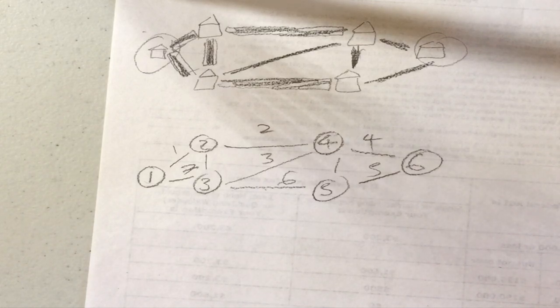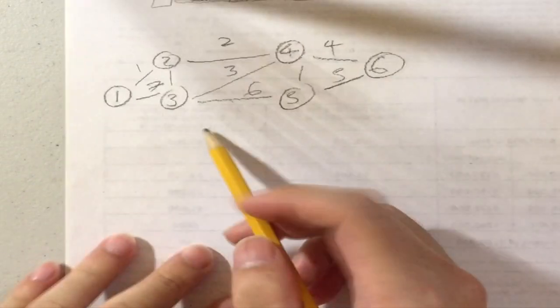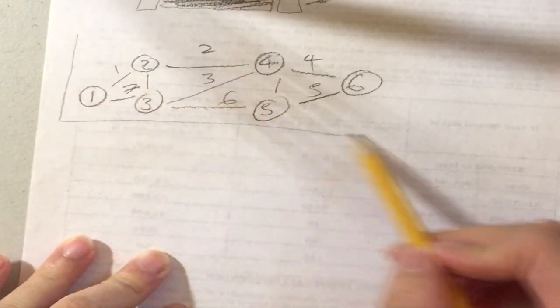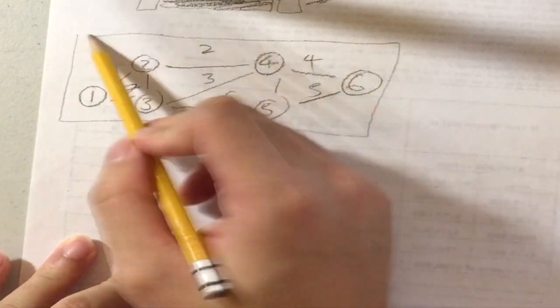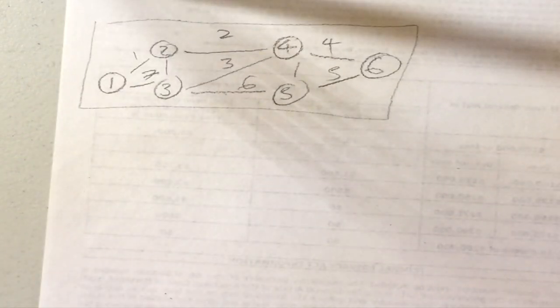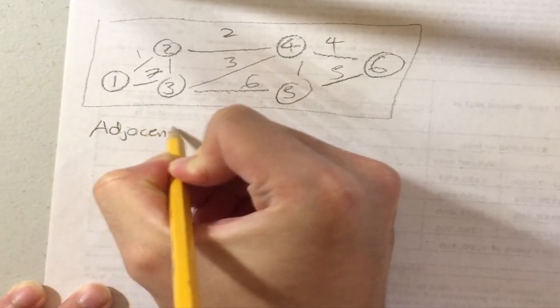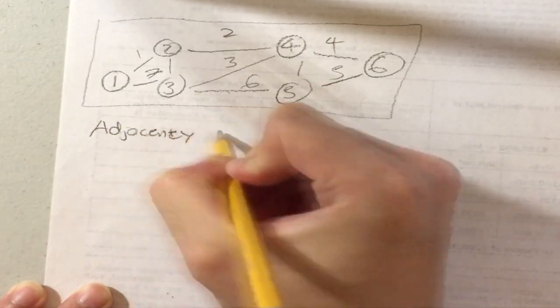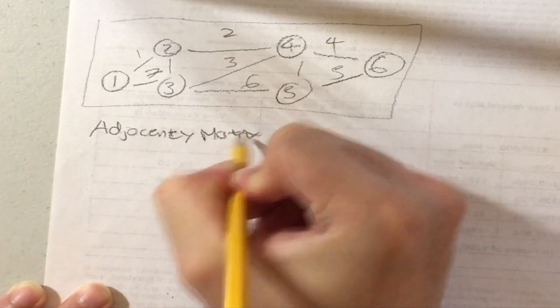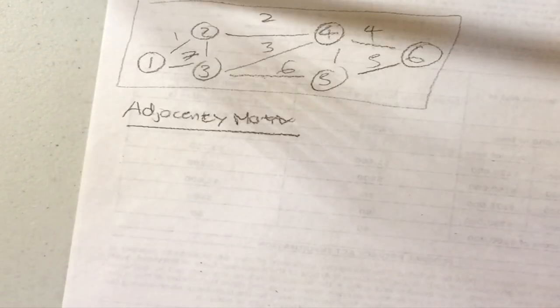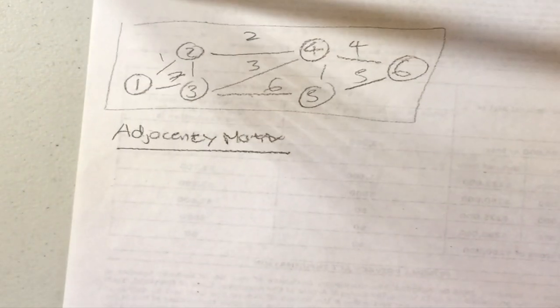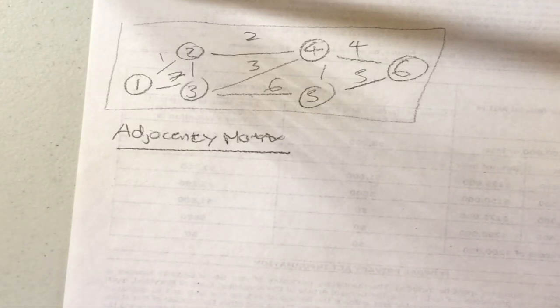So let's say I have a graph like this and I want to represent it in code. There are two ways to do it. The first is using an adjacency matrix. This is probably the easiest way to represent a graph.